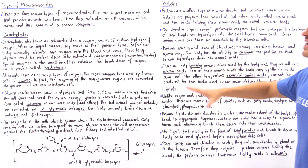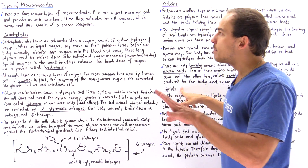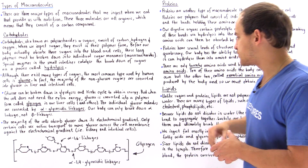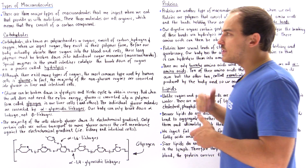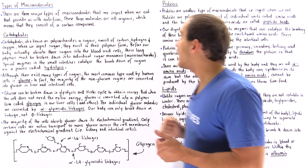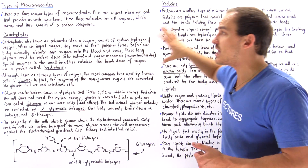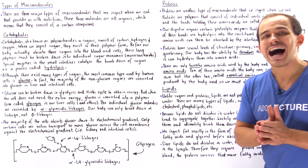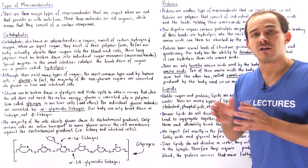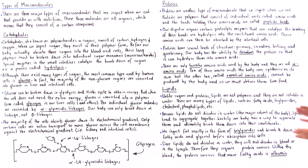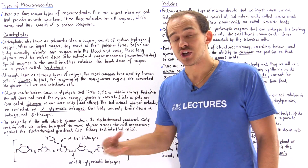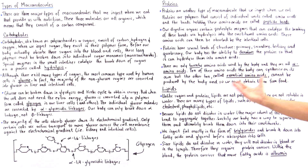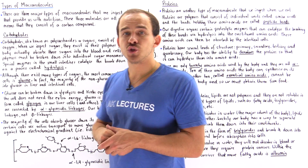Now let's move on to the final organic macromolecule: lipids. Organic simply means it contains carbon, so all these macromolecules contain a carbon component. Lipids are also known as fats, and unlike carbohydrates and proteins — which are water-soluble and are polymers — lipids are not water-soluble, meaning they do not dissolve in a polar solvent, and they are not polymers composed of individual repeating units. There are many different types of lipids we can ingest, including steroids, triglycerides, fatty acids, and phospholipids.